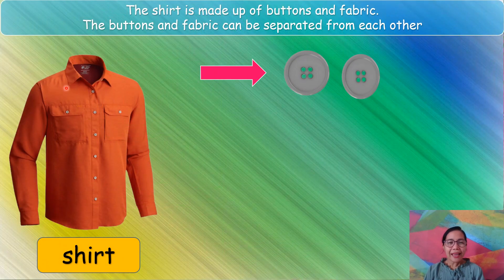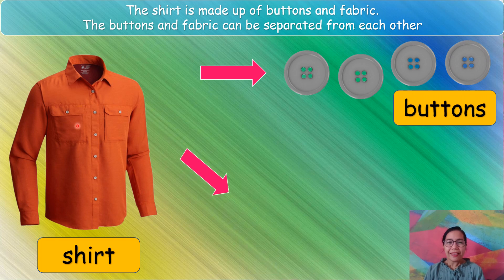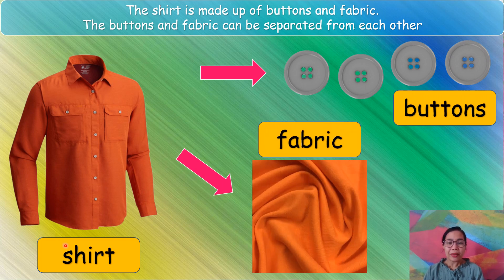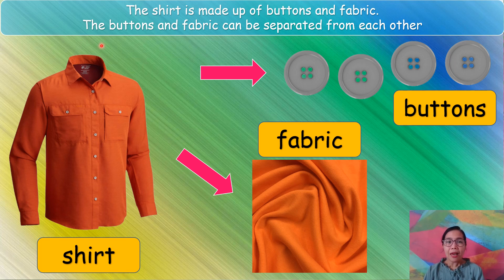Look at this picture. This is a shirt. This shirt is made up of buttons and fabric. The buttons and fabric can be separated from each other.